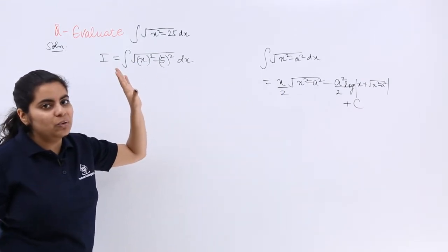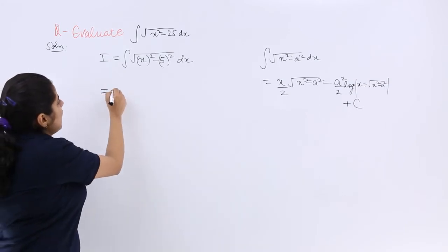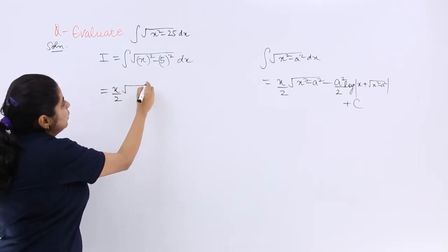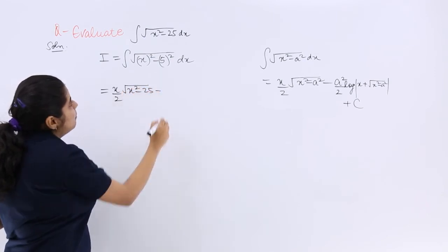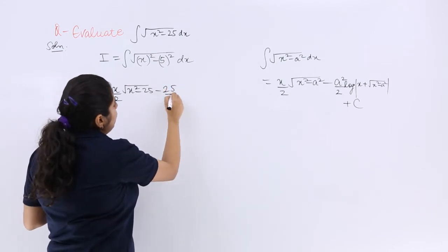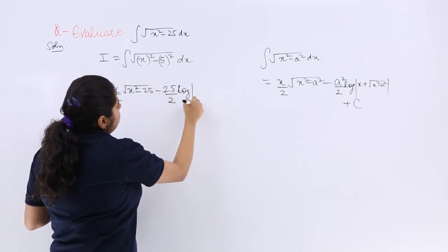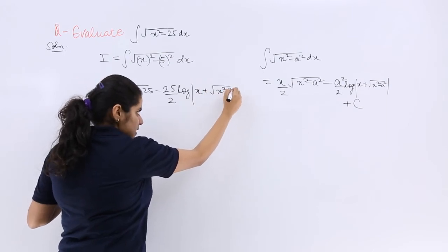And that formula when I know, nothing is difficult for me. Let me apply that formula over here. It is x by 2 under root x square minus a square, minus a square by 2 means 25 upon 2, log x plus under root x square minus a square.